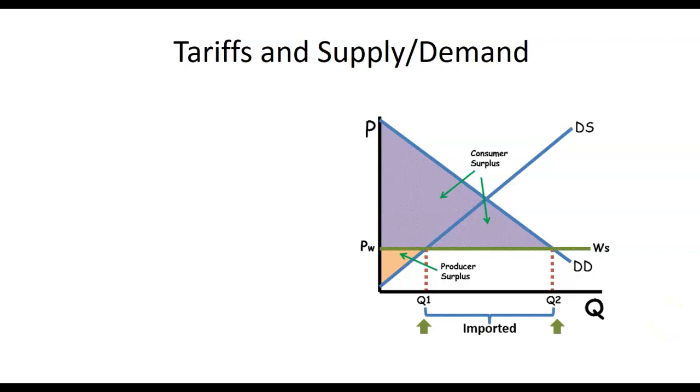So first off, we start out with a supply and demand graph. Let's break down some things. You see in the y and x-axis, you have the typical P and Q. But now we have the supply curve upward slope. It says DS. That would be domestic supply. And then we have a demand curve, which is DD for domestic demand. And then we have this PW. That's going to be the price that the world can offer.